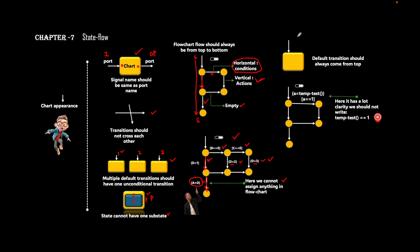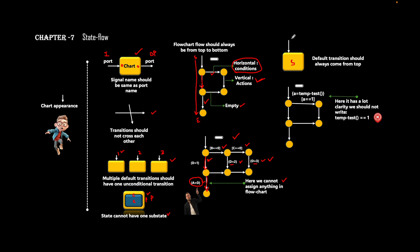Coming to the next concept related to default transitions: as you can see in the state chart, the state always receives the default transition from the top level. The state should always have a default transition coming from the top level — it should not come from a side direction. That is a guideline stated in the map guideline.